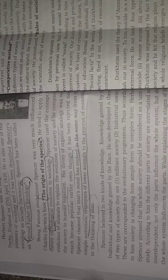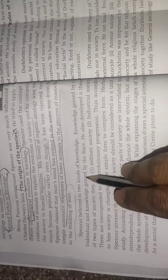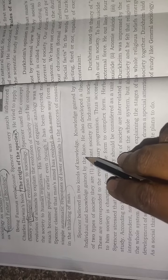Herbert Spencer was influenced by Darwin's theory — that we have developed from modern ape to modern man. Similarly, Spencer said that we have a mind inherited from lower animals which has been developed. However, this theory was rejected. Spencer believed in two kinds of knowledge: knowledge gained by the individual and knowledge gained by the race.